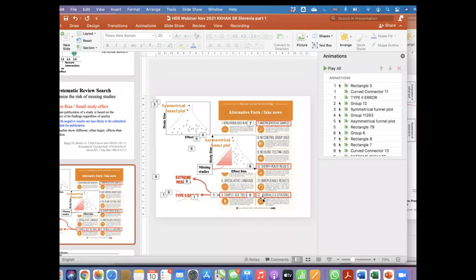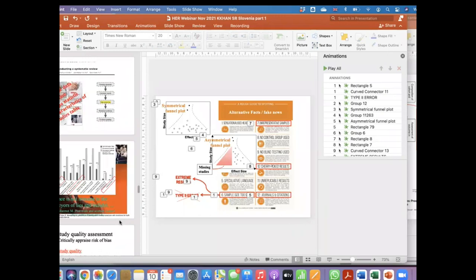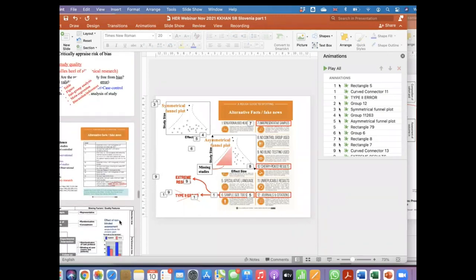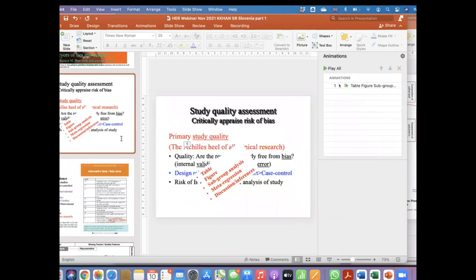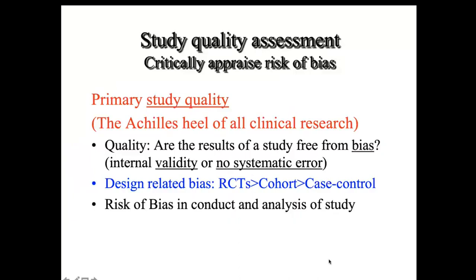Having done this, the next step in systematic review is to evaluate the quality of the studies. The quality assessment of the included studies shows us what the literature is really worth. By quality, we mean that the study is free of bias, that it is internally valid, and that it does not have any systematic error.